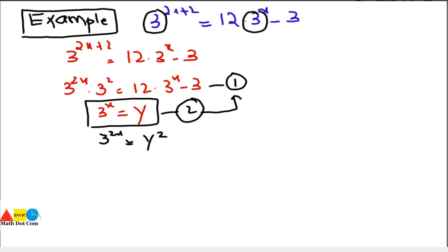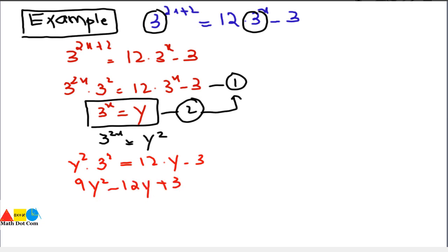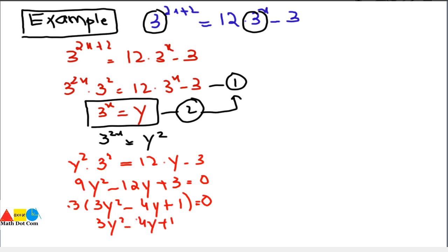Substituting gives y²·9 = 12y − 3. Moving all terms to the left: 9y² − 12y + 3 = 0. Taking 3 as common: 3y² − 4y + 1 = 0. This is a quadratic equation — we have successfully reduced the exponential equation to quadratic form.